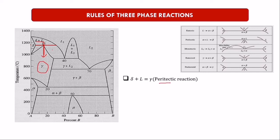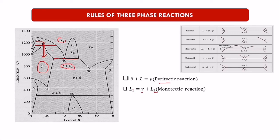Next, look at the L1 isotherm. There is a liquid here. We indicate the isotherm and find three points. The reaction is: liquid one → gamma (austenite) + liquid two. A liquid transforming into a new liquid and a solid is a monotectic reaction. Note: if there are no three points on a line, you cannot find a reaction there — always find the isotherm first.